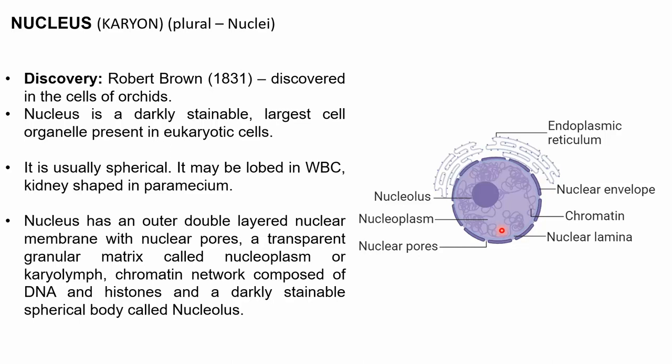Inside the nucleus, there is chromatin — the condensed form of chromosomes. During different stages of cell division, chromosomes may be highly condensed or loosely present. Chromatin consists of DNA and histone proteins, which help in binding the chromosome and forming the chromatin structure. There is also a darkly stainable spherical body inside the nucleus called the nucleolus.